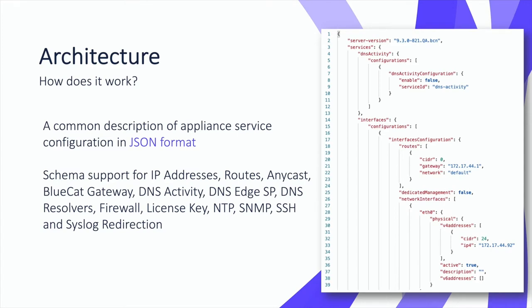This allows for provisioning automation and reconfiguration of services on the fly. For details on the schema itself and the options available, see the Configure Services section in the Integrity 9.3 Address Manager API guide.